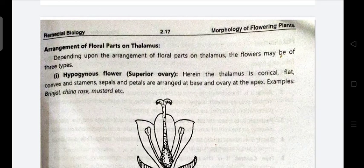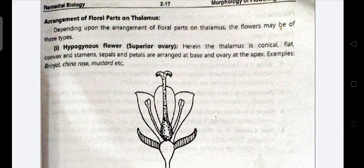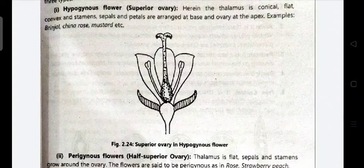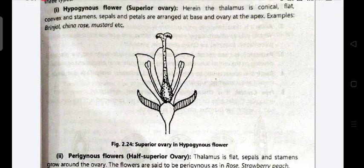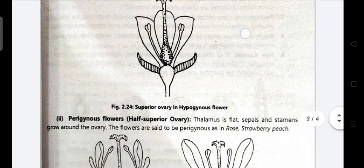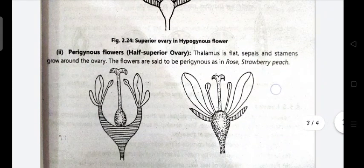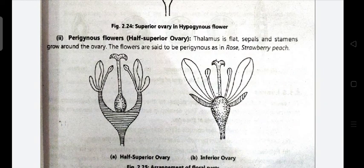Depending on the arrangement of floral parts on the thalamus, flowers may be of three types. First: hypogynous flower — that is, superior ovary. Here the thalamus is conical; sepals and petals are arranged at the base, and the ovary is present at the apex. Examples: brinjal, China rose, mustard. Second: perigynous flower — half superior ovary. The thalamus is flat and sepals and stamens grow around the ovary. Examples: rose, strawberry, peach.